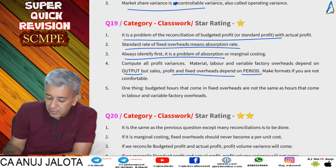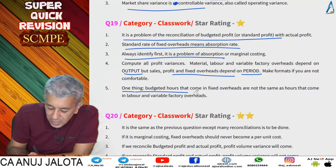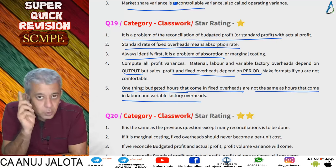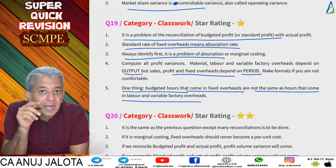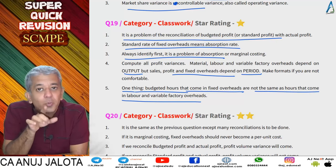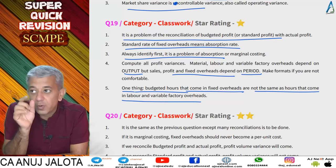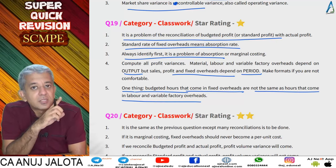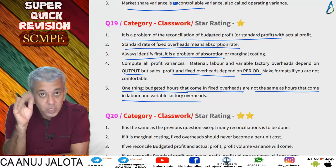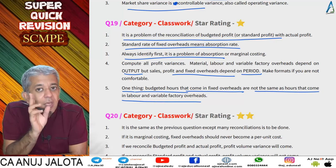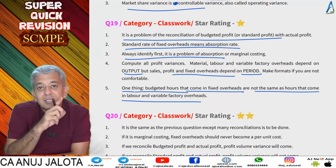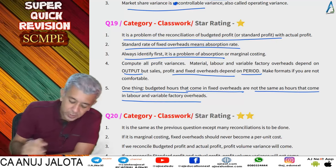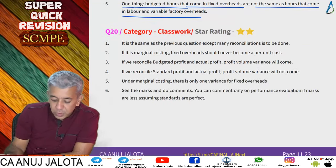One important point: budgeted hours used in fixed overhead rates are not the same as hours in labor and variable factory overheads. When you make standard data for labor, it's standard hours for actual output. But for fixed overheads, budgeted data is budgeted data for the year — standard hours for standard output.